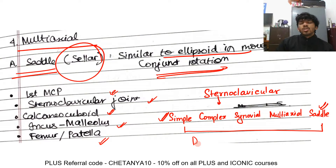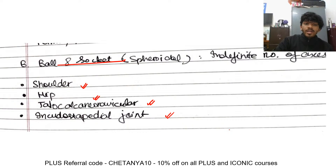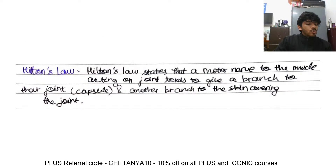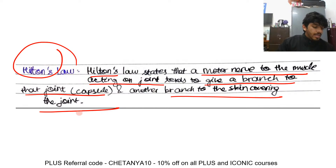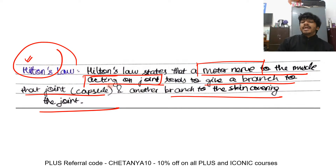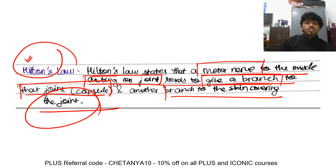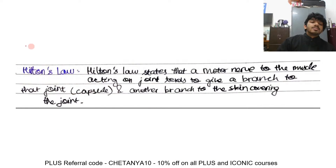One important concept is Hilton's Law. It states that a motor nerve to the muscle acting on a joint tends to give a branch to that joint capsule and another branch to the skin covering that joint. This is a direct examination question — sometimes the law is described and you are asked to name it.